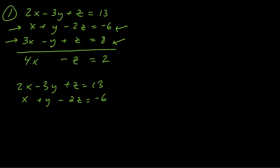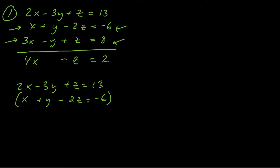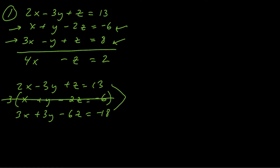We're sticking with the y's. I have a negative 3y in equation one and a positive 1y in equation two, so I need to get the second equation to a positive 3y so that when I add straight down, the y's cancel. So I'm going to multiply that whole equation by 3, giving us 3x plus 3y minus 6z equals negative 18. Adding these two equations together to eliminate the y's gives us 5x minus 5z equals negative 5.